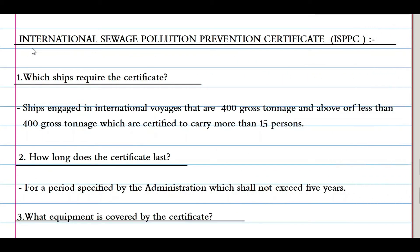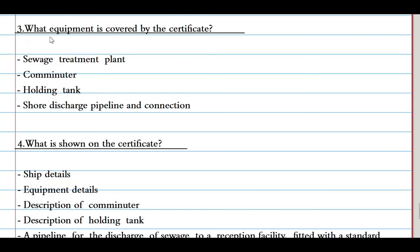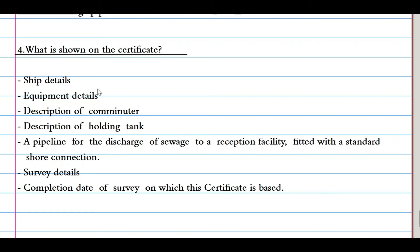The International Sewage Pollution Prevention Certificate (ISPPC) is required by ships engaged in international voyages that are 400 gross tonnage and above, and ships less than 400 gross tonnage certified to carry more than 15 persons. This certificate lasts for a period specified by the administration, which shall not exceed five years. Equipment covered by the certificate includes the sewage treatment plant, the comminuter, the holding tank, and shore discharge pipelines and connections.